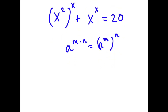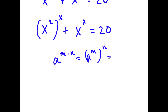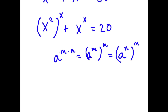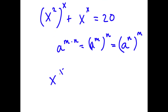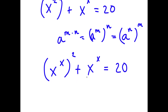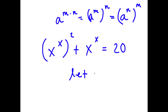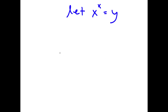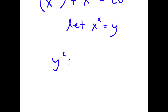Since this is true, a to the power of m to the power of n is the same as a to the power of n to the power of m, meaning x to the power of 2 to the power of x is the same as x to the power of x to the power of 2. Now I'm going to let x to the power of x equal the variable y. So now I have y to the power of 2 plus y is equal to 20.